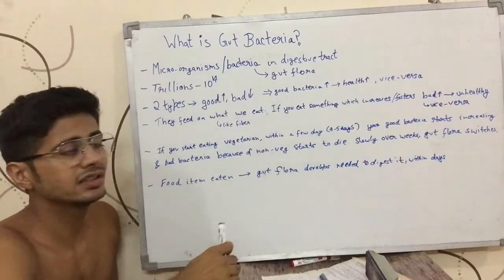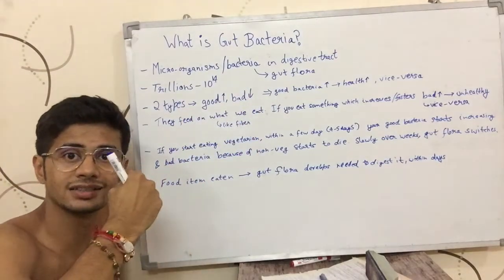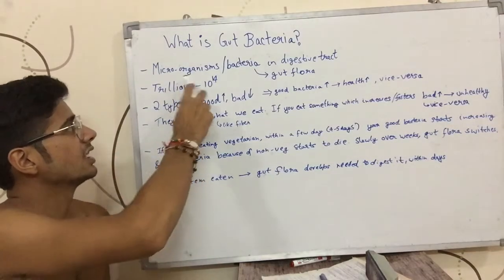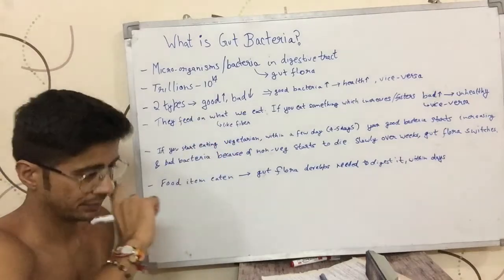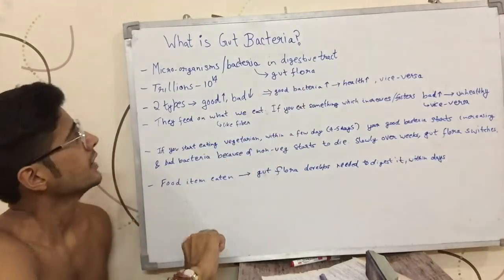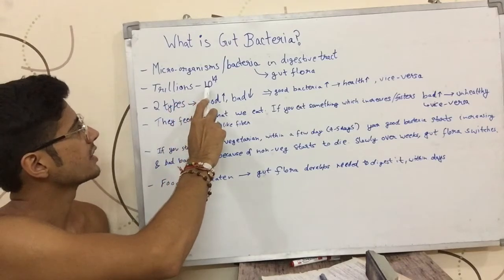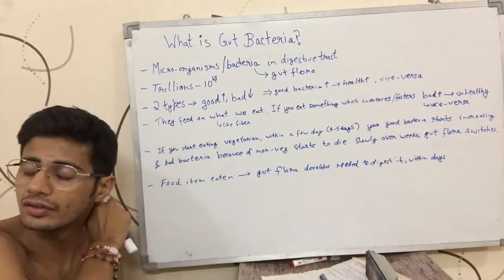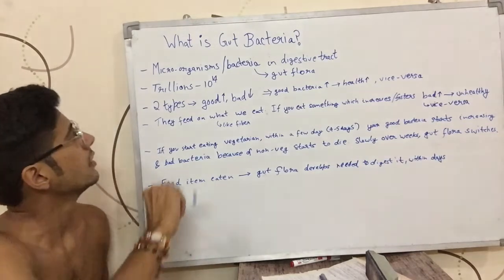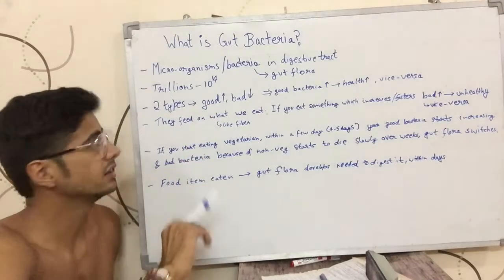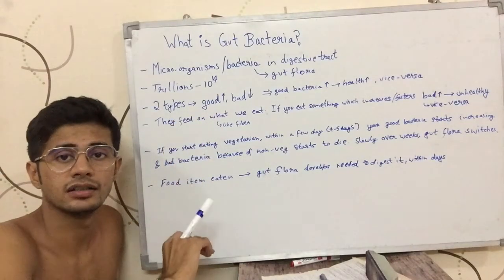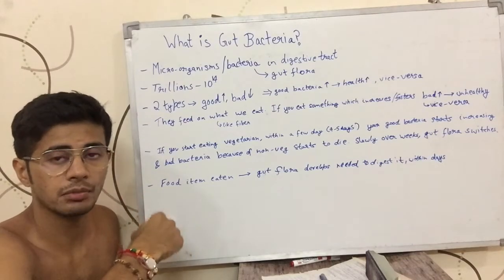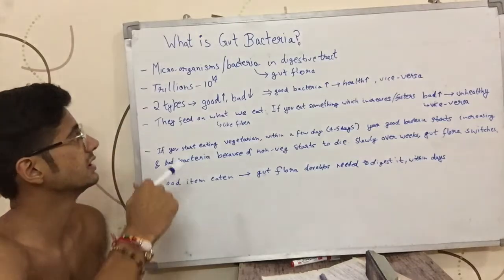So what gut bacteria is — the bacteria that resides in your digestive tract is called gut bacteria. These are microorganisms, they are also called gut flora. Their number is about 10 to the power of 14, which is like 14 zeros after one, and this is an estimated number. This number is 100 times more than the number of cells in the human body.